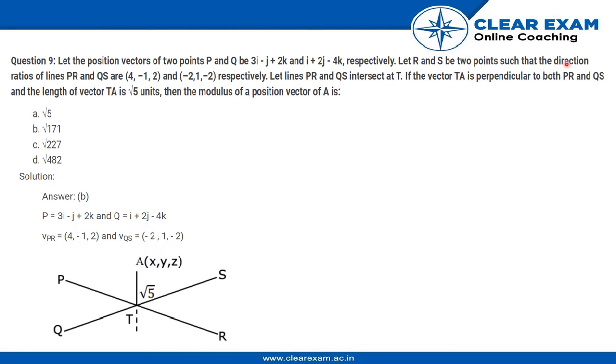Let R and S be two points such that the direction ratios of line PR and QS are this. So we have a line PR and line QS and the direction ratios of PR and QS are given to us. And we have PR and QS intersecting at the point T.